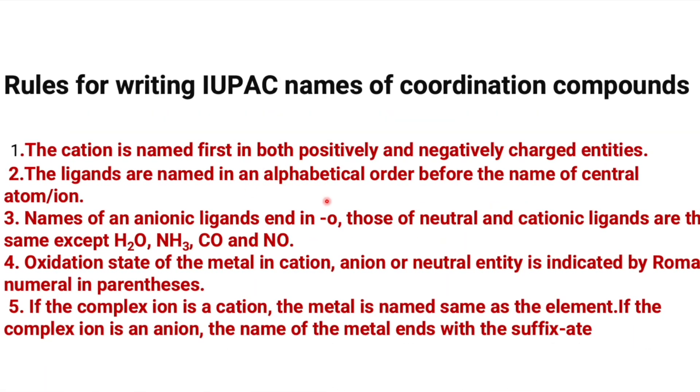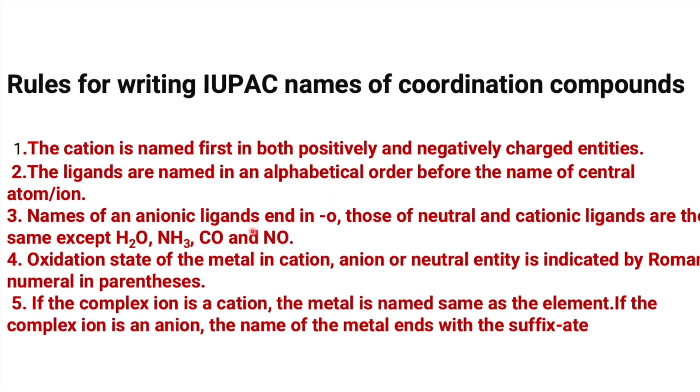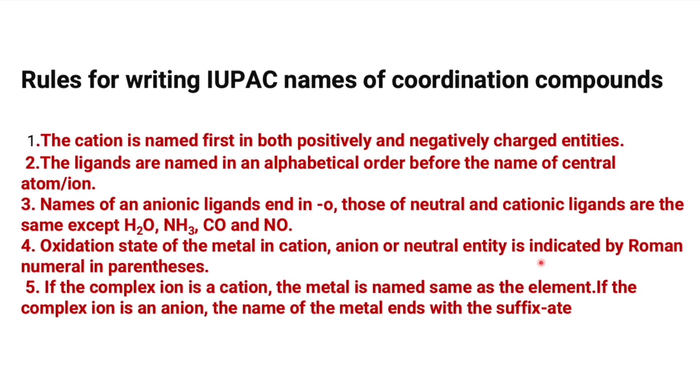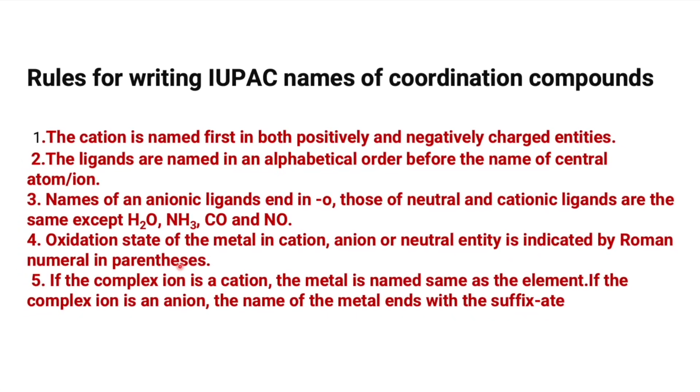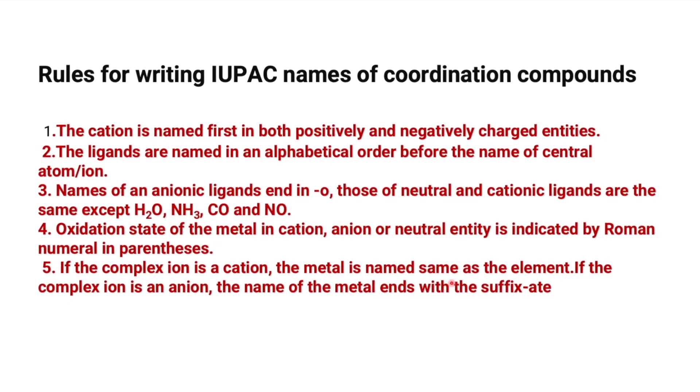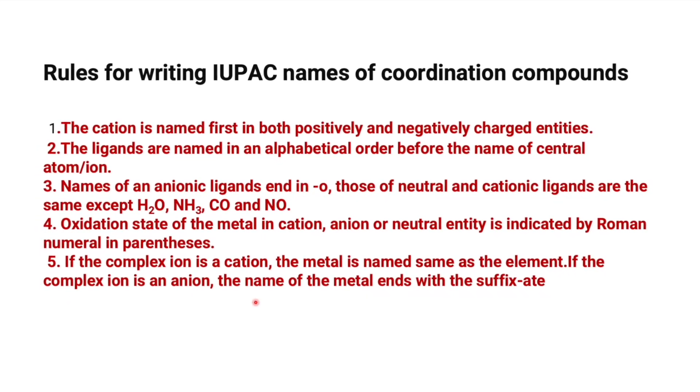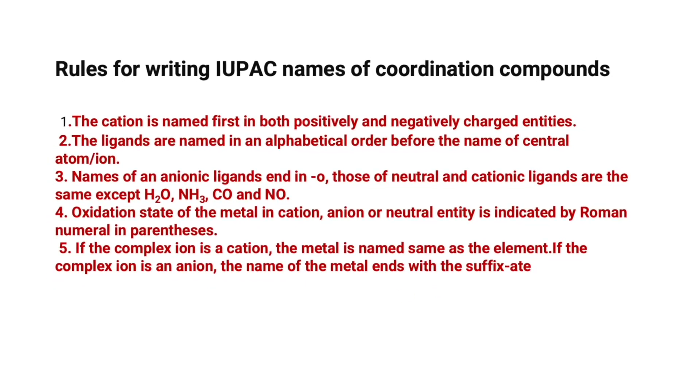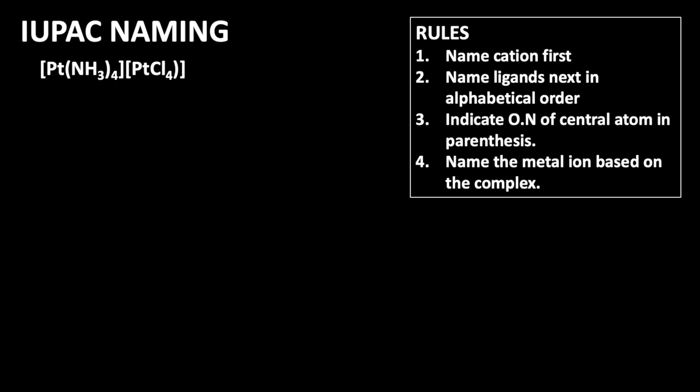As per the rules, the cation is named first. The ligands are named in alphabetical order. Names of anionic ligands end in O. Oxidation state of the metal in cation, anion, or neutral entity is indicated by Roman numeral in parentheses. If the complex ion is a cation, the metal is named the same as the element. If the complex ion is an anion, the metal ends with the suffix -ate.